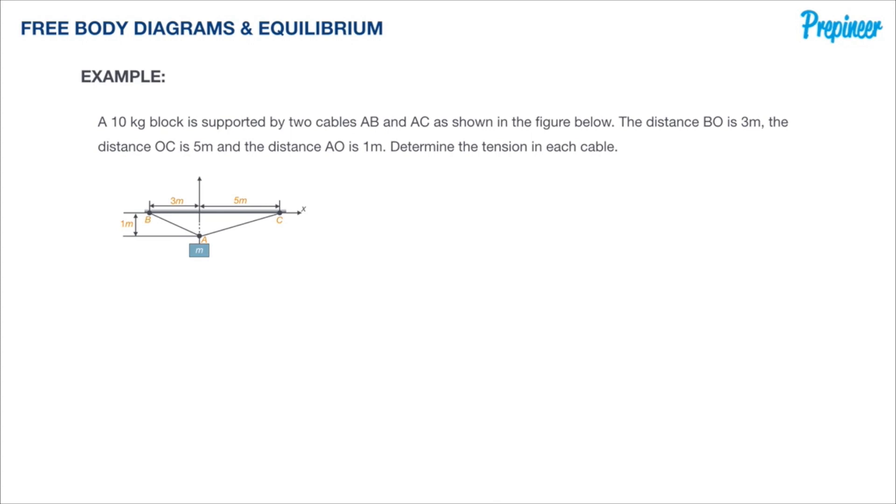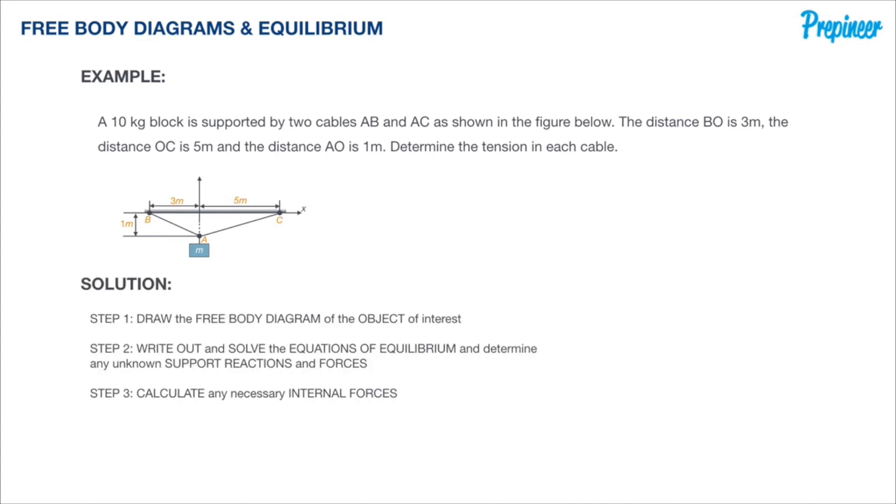This problem states that a 10 kilogram block is supported by two cables AB and AC as shown in the figure below. The distance BO is three meters, the distance OC is five meters, and the distance AO is one meter. Determine the tension in each cable. Note that O is vertical from A onto that bar.